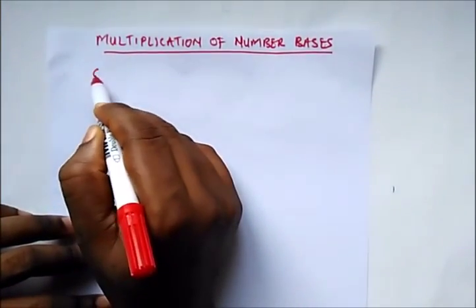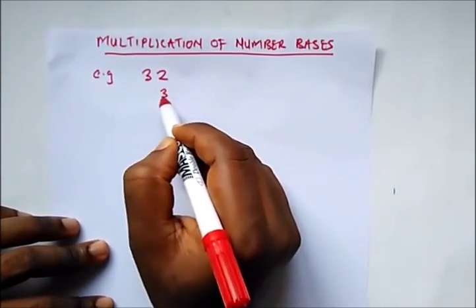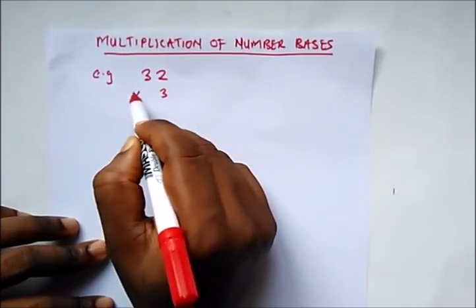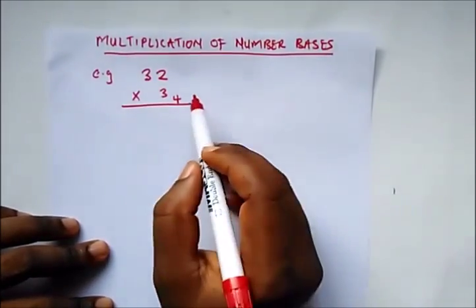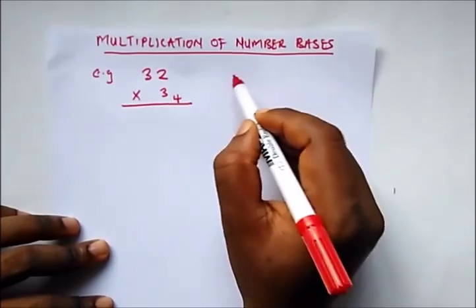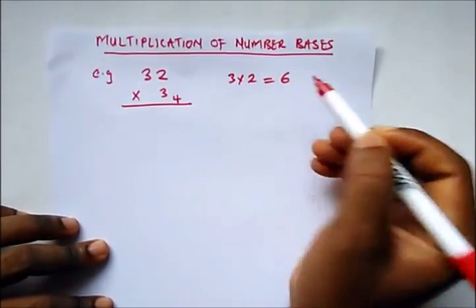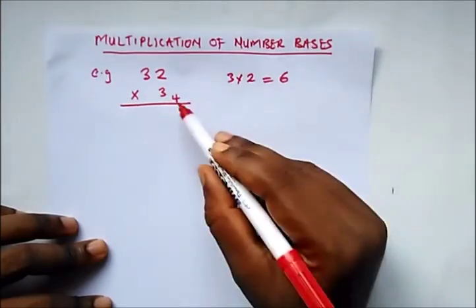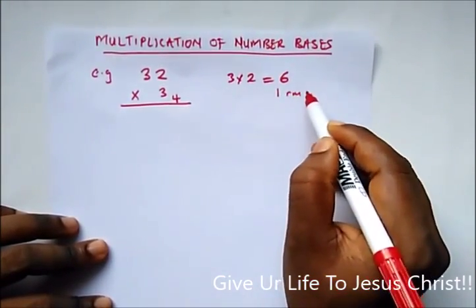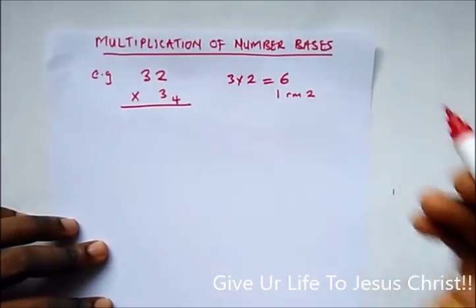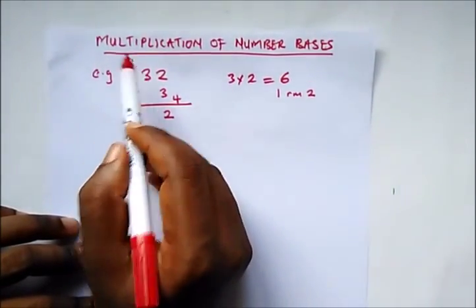So we have, for example, 32 multiplied by 3, in base 4. How do we do this? 3 times 2 is 6, and how many times would 4 go into 6? That would be 1 remainder 2. So we write our 2 and carry our 1.